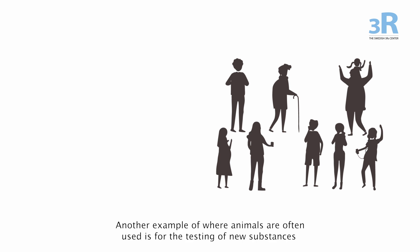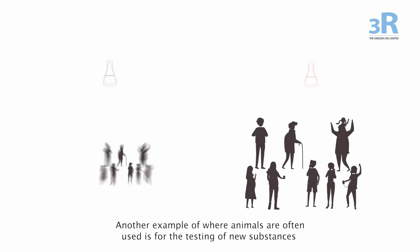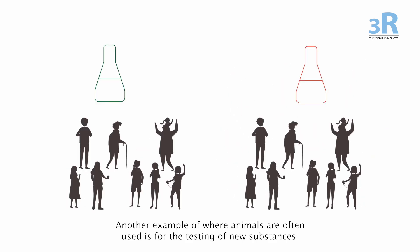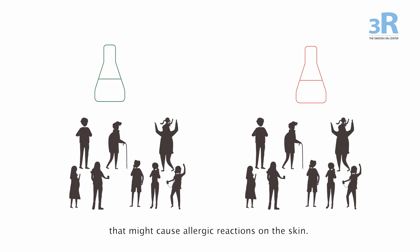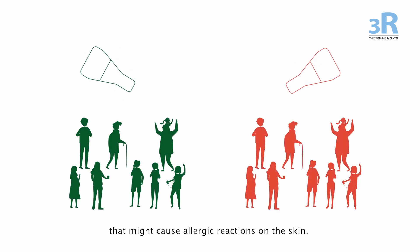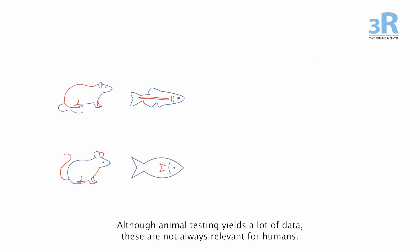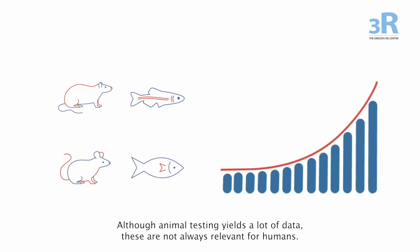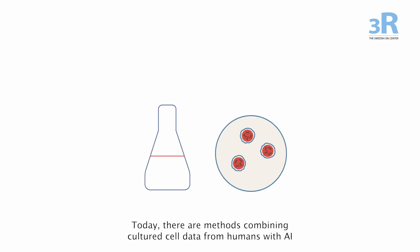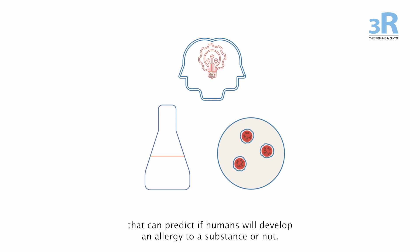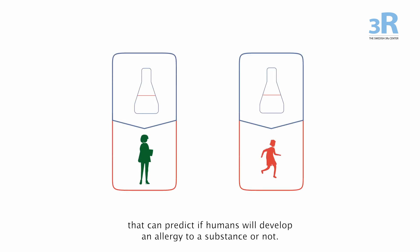Another example of where animals are often used is for the testing of new substances that might cause allergic reactions on the skin. Although animal testing yields a lot of data, these are not always relevant for humans. Today, there are methods combining cultured cell data from humans with AI that can predict if humans will develop an allergy to a substance or not.